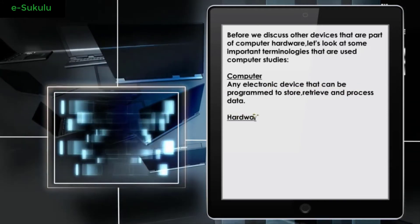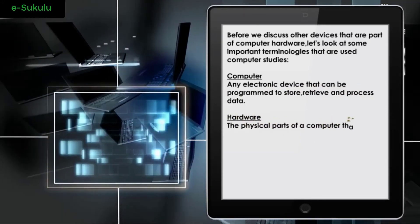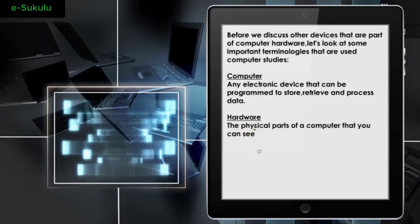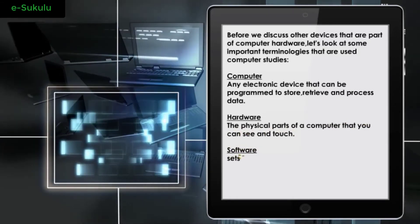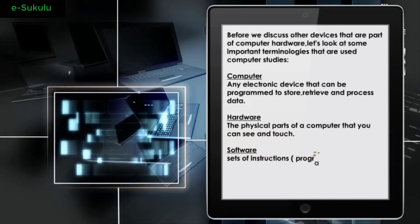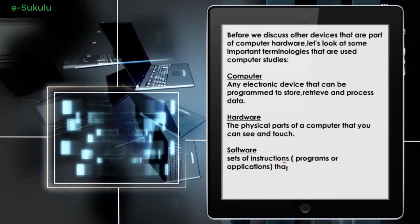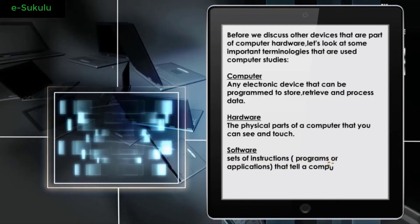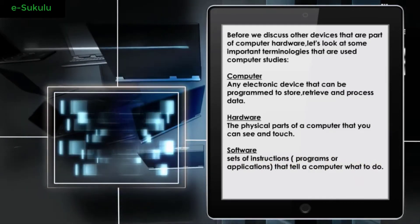Hardware: the physical parts of a computer that you can see and touch. Software: sets of instructions, programs, or applications that tell a computer what to do.